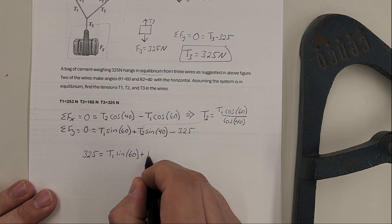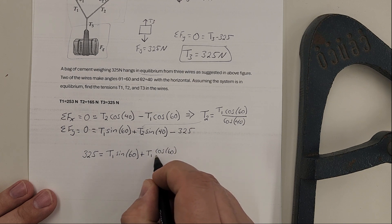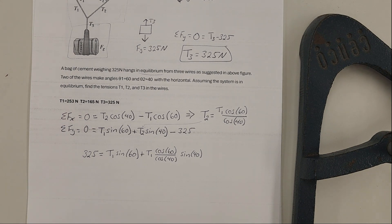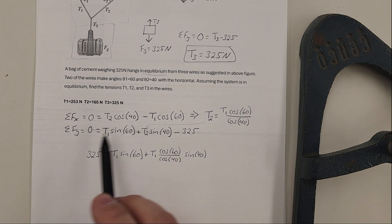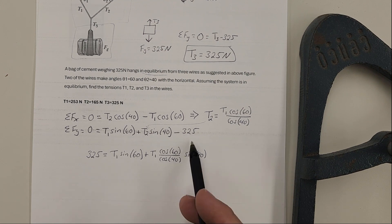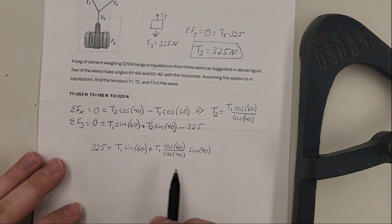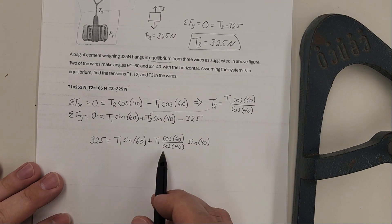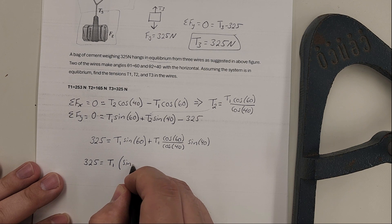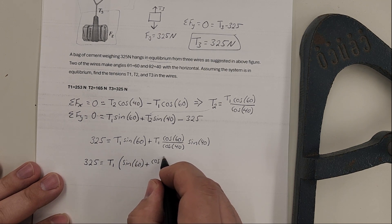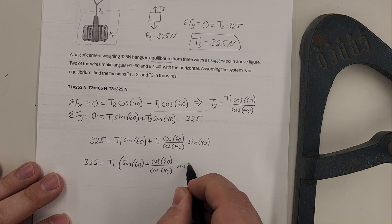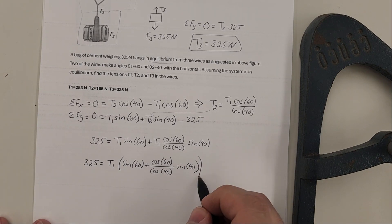I'm going to have T1 cosine of 60 over cosine of 40 times the sine of 40. You can do a couple of trig identities in here - you have sine over cosine gives you a tangent - but given the degrees that we have, we can actually just solve this out for numbers. I have a T1 in both of these, so I'm going to factor out T1. I'm going to have 325 is equal to T1 times sine of 60 plus the cosine of 60 divided by the cosine of 40 times the sine of 40. So now this is just a number.